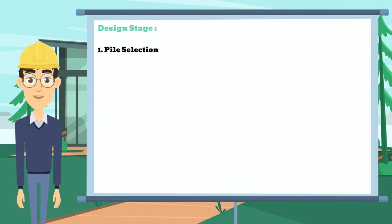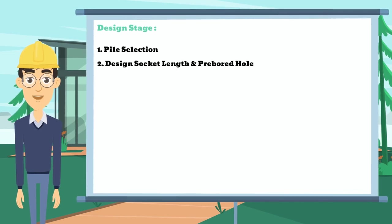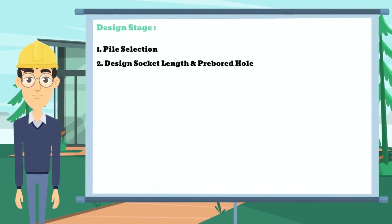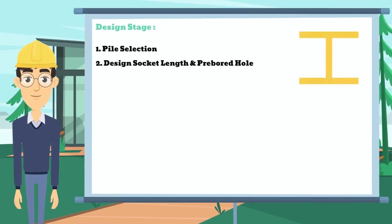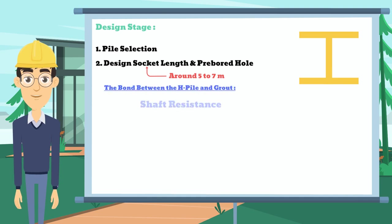After calculating the pile capacity, we need to estimate the socket length of the pile, which mainly depends on the bond friction between the H-Pile and grout, and also between the grout and the rock socket. Socket length is around 5 to 7 meters, which can be designed to match the structural requirement. For the bond between H-Pile and grout, it is calculated by the shaft resistance multiplied by the contact area of the pile and grout at the part of the rock socket.